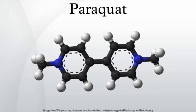Paraquat is the trade name for N,N-prime-dimethyl-4,4-prime-bipyridinium dichloride, an organic compound with the formula C5H4N 2 Cl2. It is classified as a viologen, a family of redox-active heterocycles of similar structure.